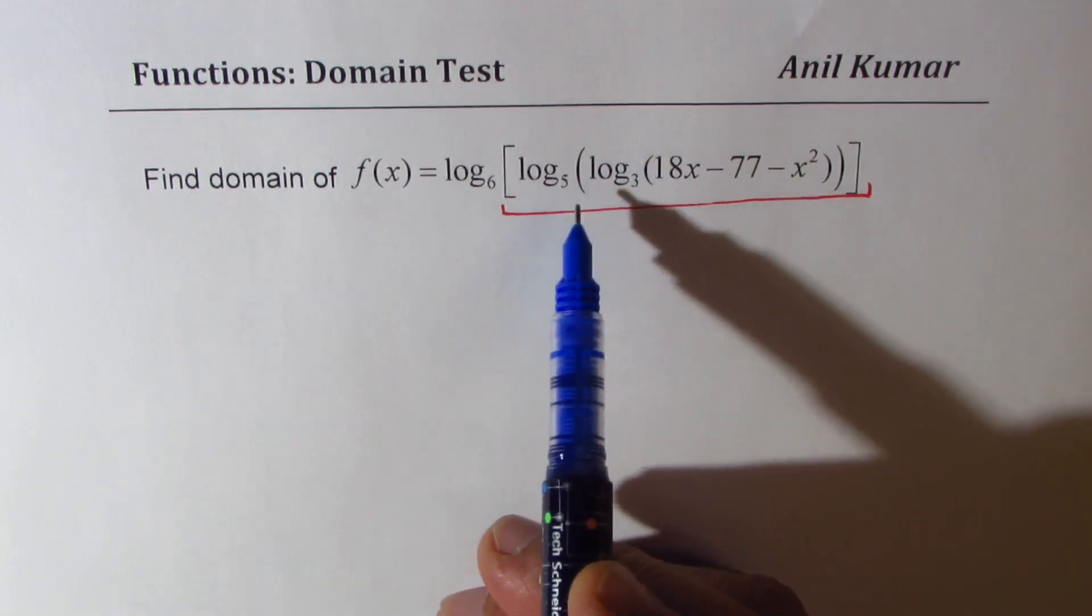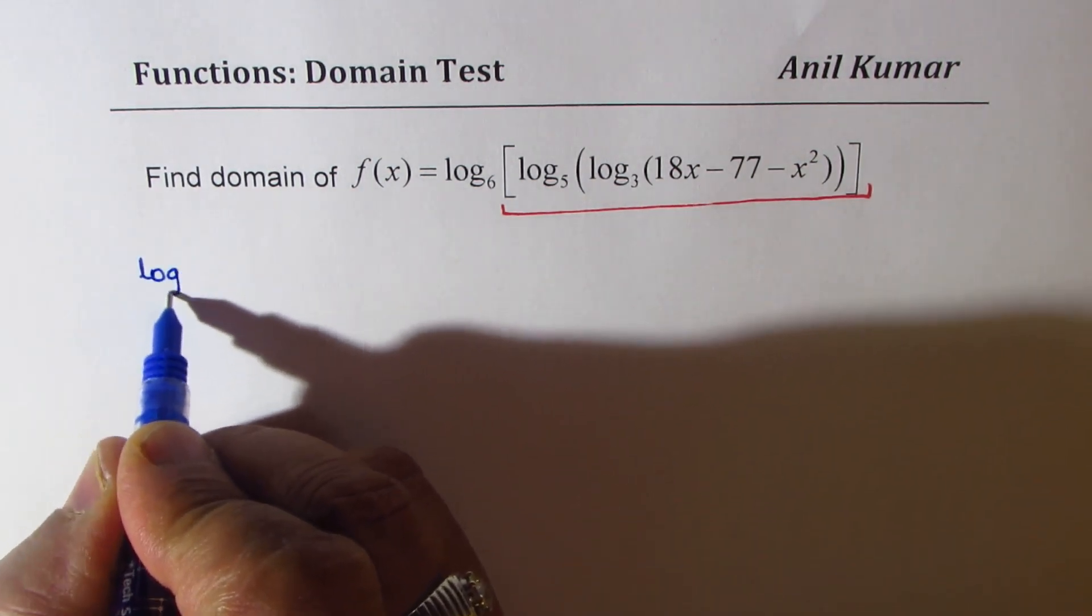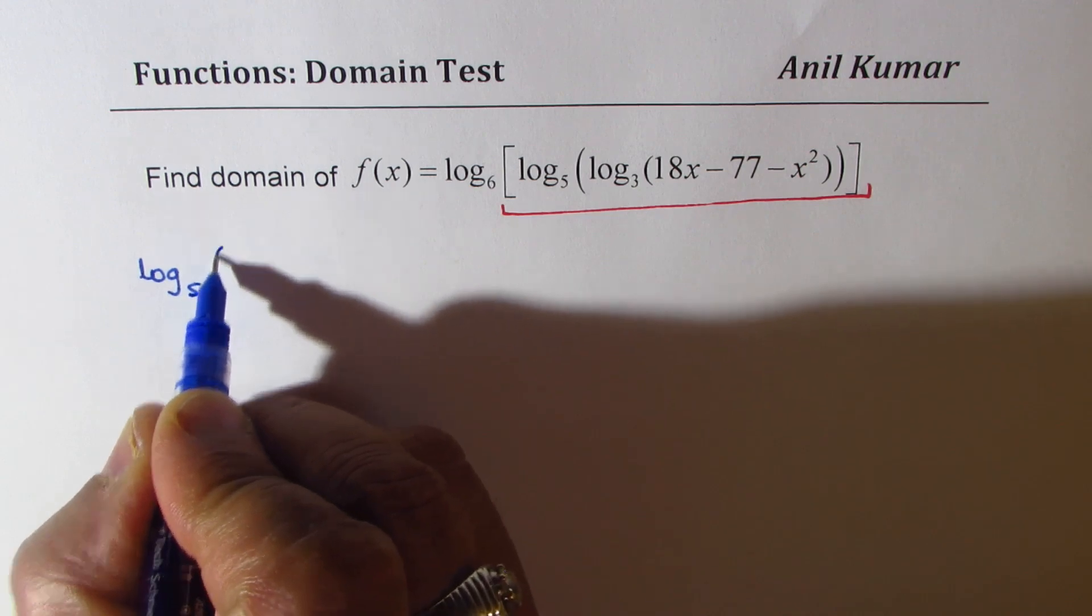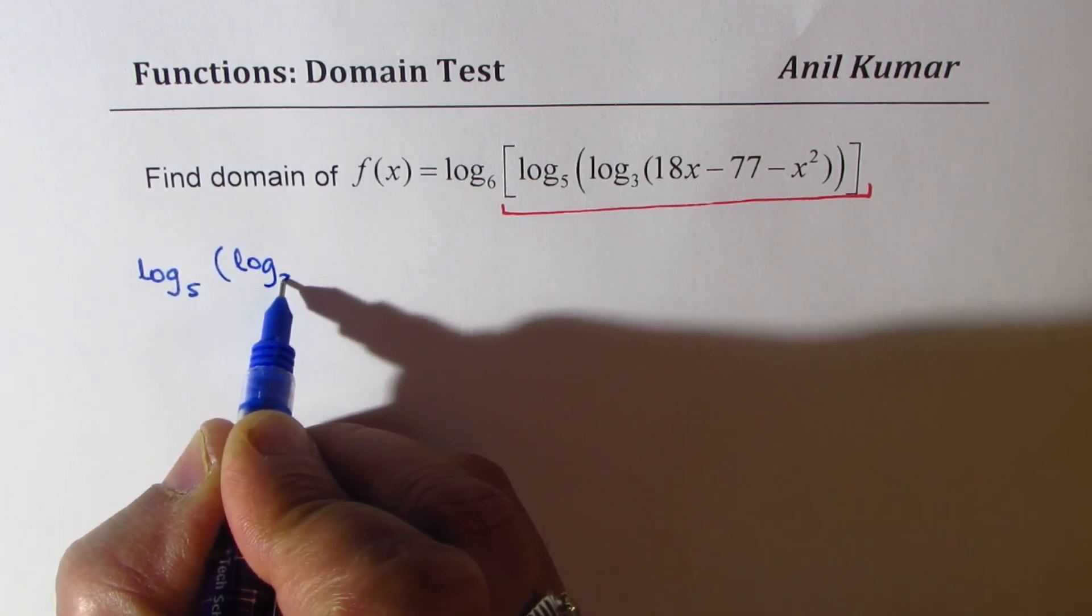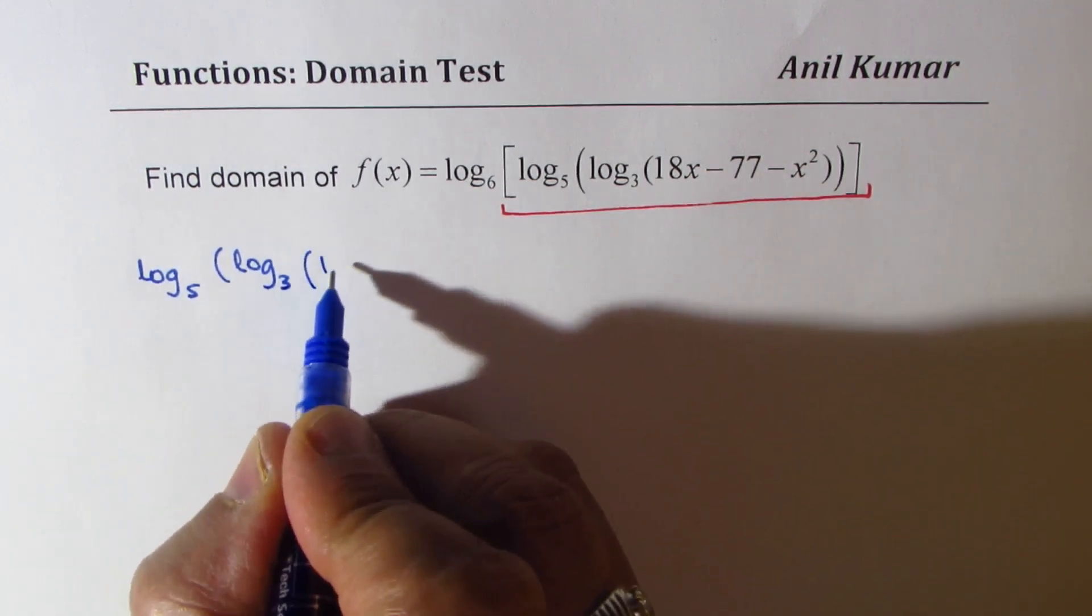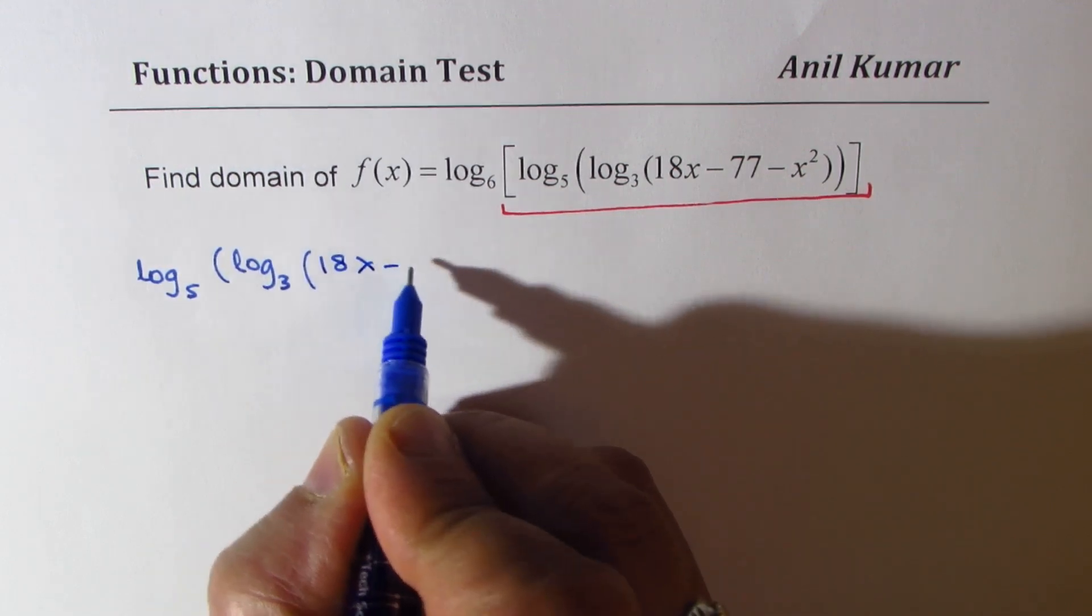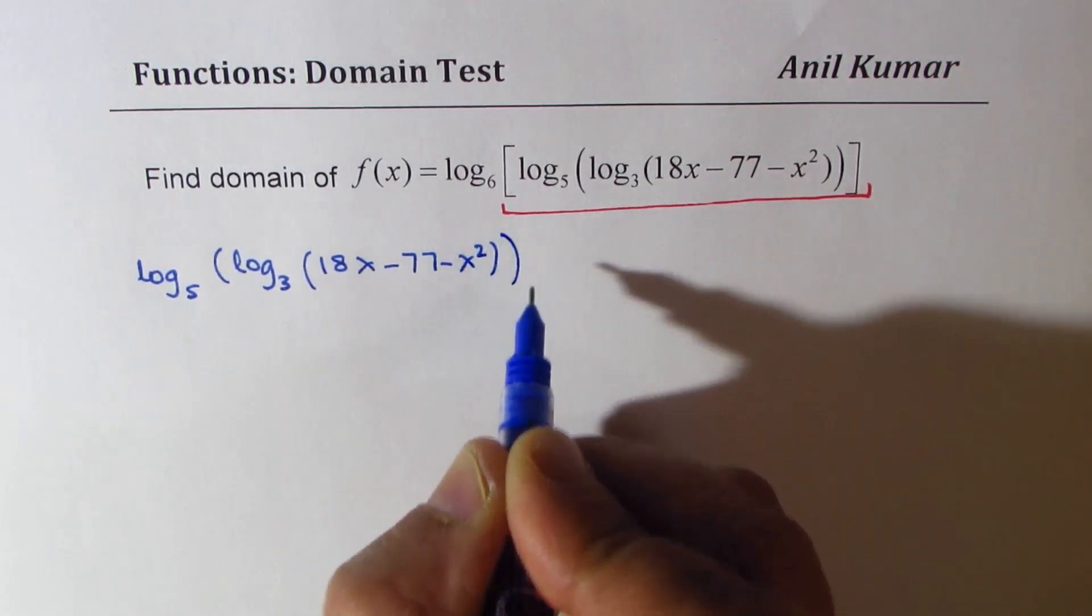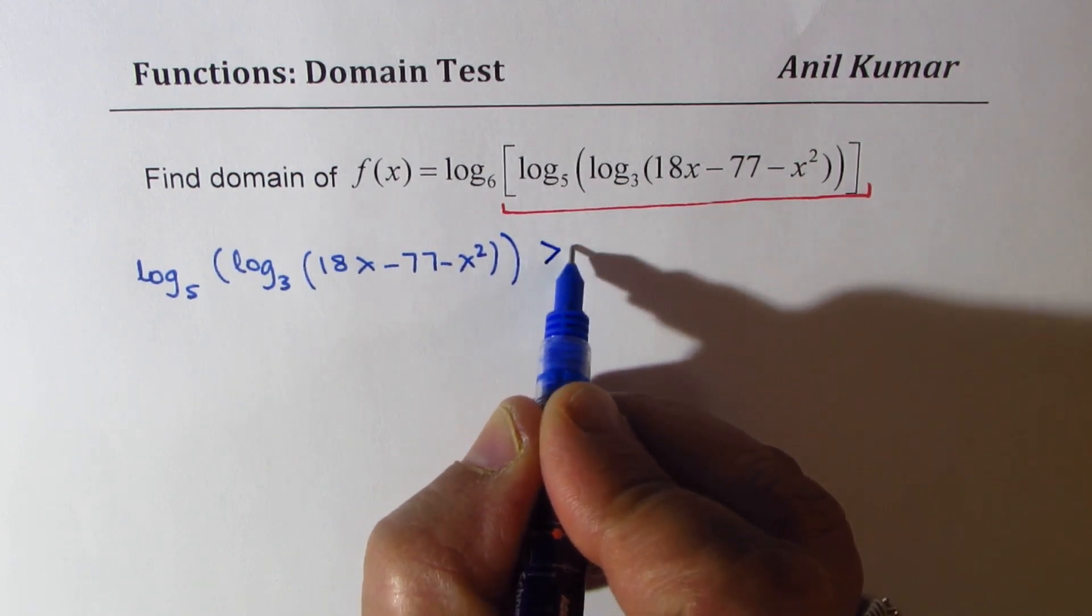So we get one condition here which is log base 5 of log base 3 of 18x minus 77 minus x squared. Now that should be greater than 0.